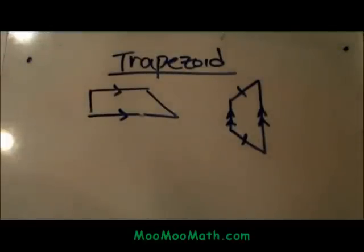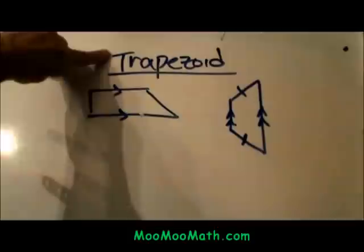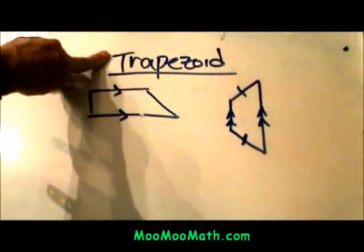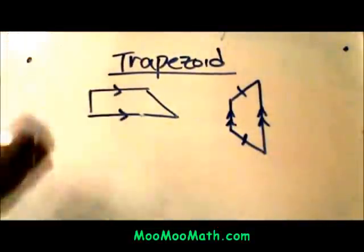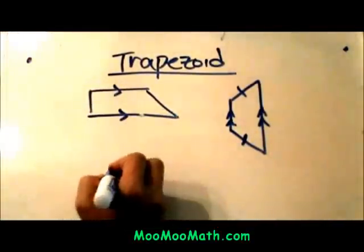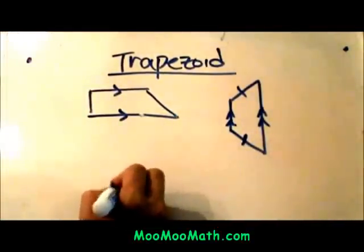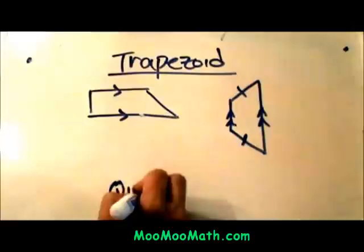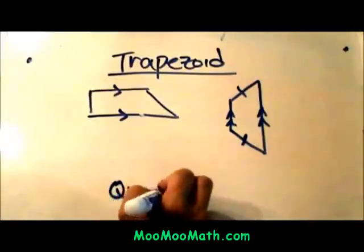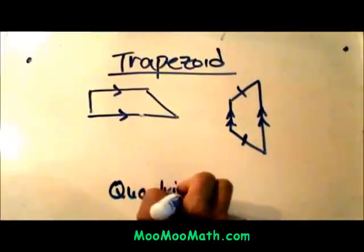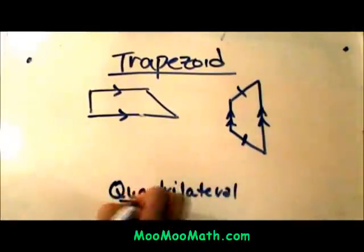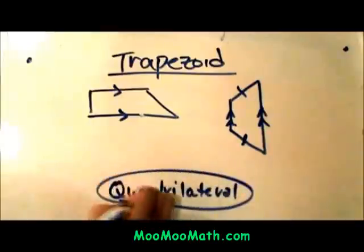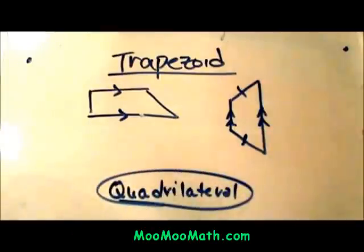Hi, welcome to Moo Moo Math. Today we are going to look at trapezoids. What is a trapezoid? A trapezoid is a quadrilateral. What does that mean to be a quadrilateral? It means that it has four sides, but it is a special type of quadrilateral.